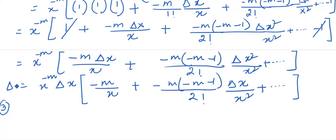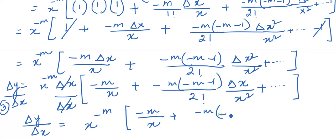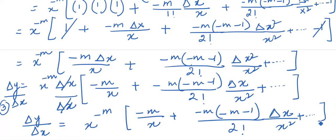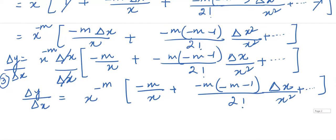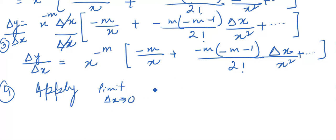Now step 3: divide both sides by delta x. After dividing, delta x cancels, leaving: delta y over delta x = x raised to power minus m · [(-m / x) + (-m)(-m-1)/2! · (delta x / x^2) + so on]. Now step 4: apply the limit — delta x tends to 0 on both sides.